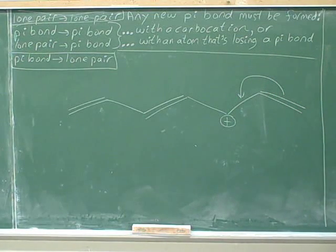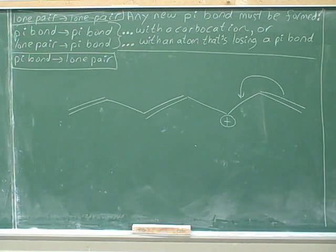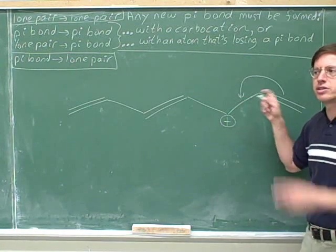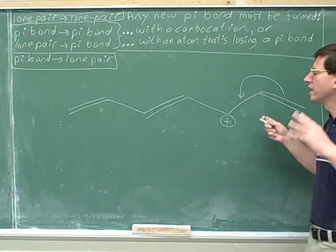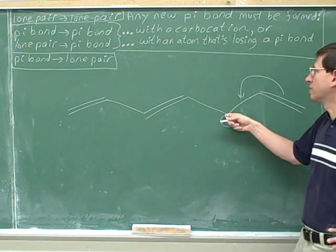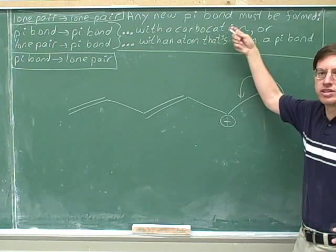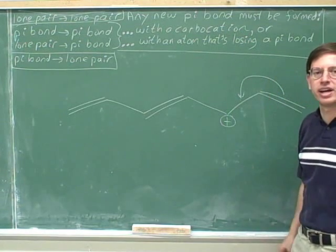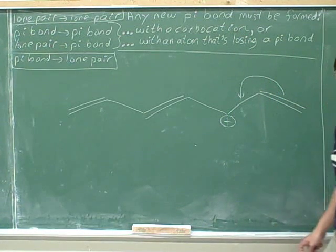Is this legal? We're forming a pi bond, so we do have to be careful. But it's not a problem because we're forming the pi bond with a carbocation. Carbocations always have room for extra electrons, so this is fine. This is a good arrow.